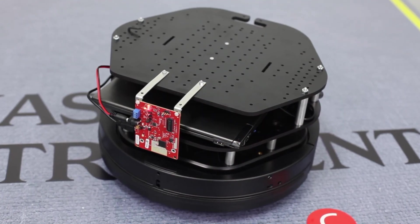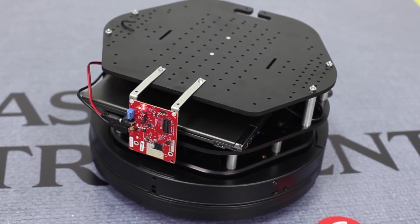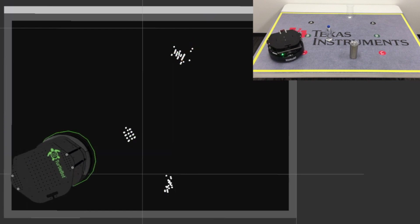We took a TurtleBot 2 Robot OS reference platform and mounted an IWR 1443 EVM on the front facing forward. This EVM streams a point cloud of the detected object's range, velocity, and angle to a laptop running the Robot Operating System, or ROS.